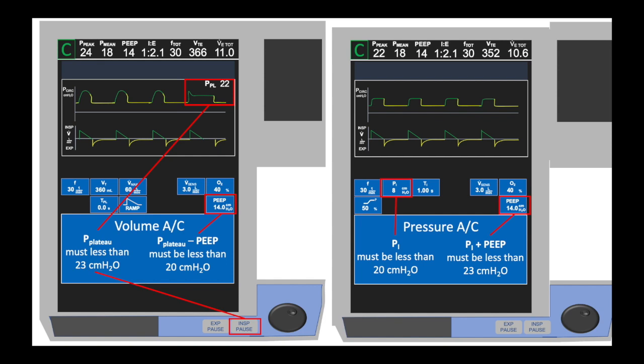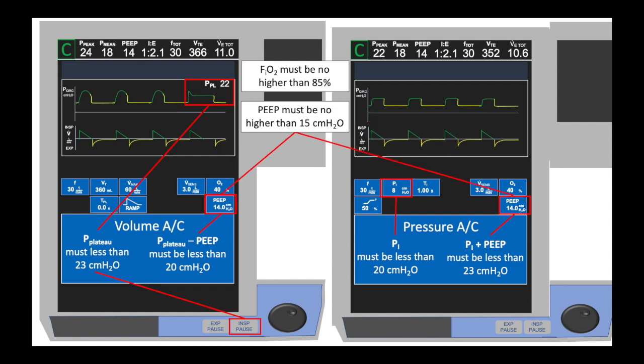Regardless of what mode of mechanical ventilation the patient is on, the FiO2 — the delivered fraction of inspired oxygen — cannot be greater than 85%, and the PEEP cannot be greater than 15 centimeters of water. If patients fulfill all of these criteria, and they have stable ventilation requirements, and there is a shortage of mechanical ventilators, they may be appropriate for switching to VPAP-ST for invasive mechanical ventilation.